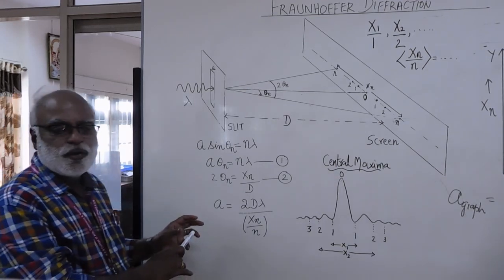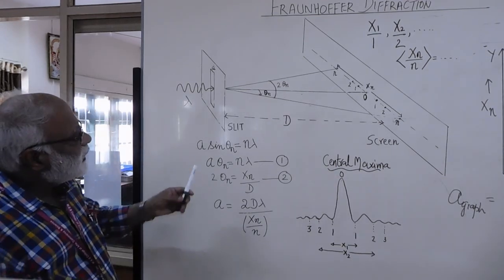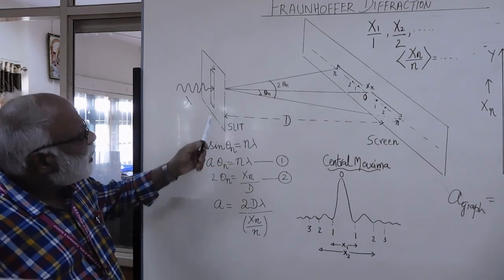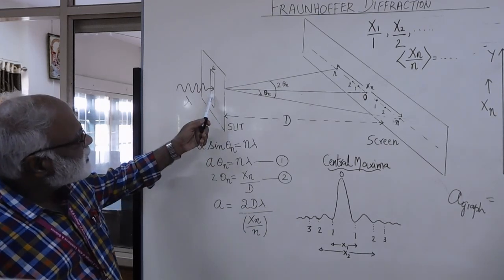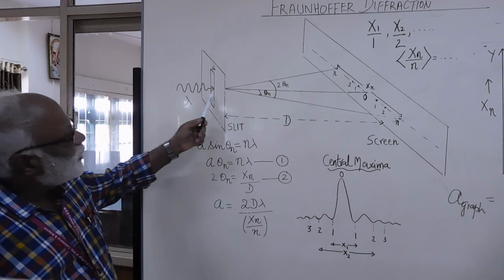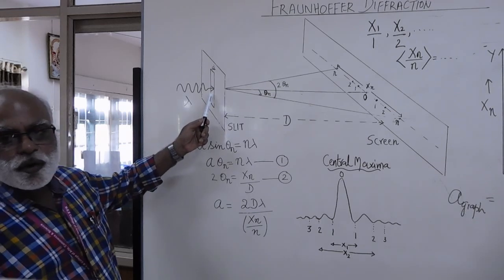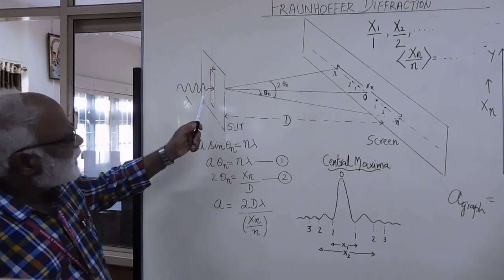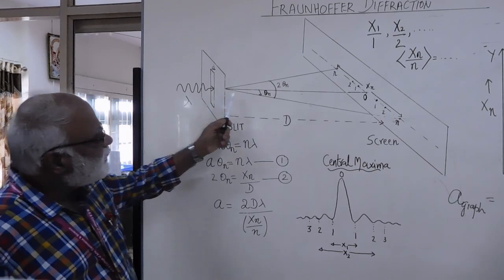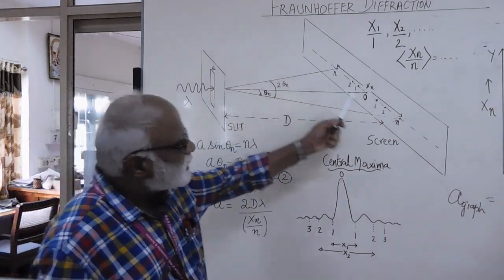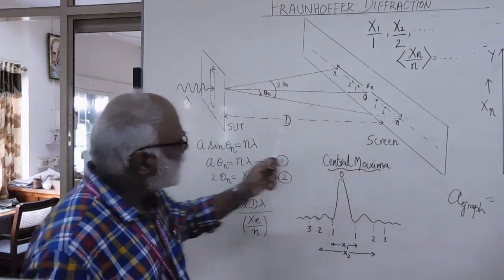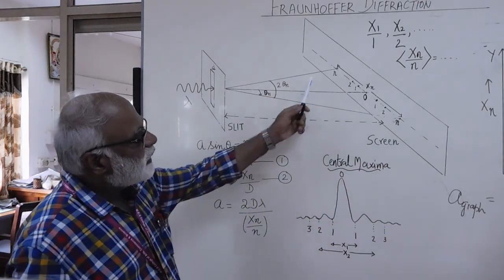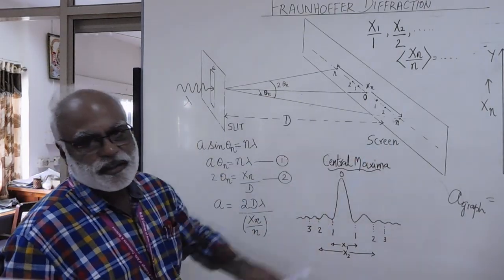Here on this board we have drawn a schematic diagram of a single slit of width A, which is illuminated by monochromatic light of wavelength lambda. This light is from a laser source. There is a diffraction pattern which will be formed on a screen kept far away from the slit, giving us a Fraunhofer diffraction pattern.